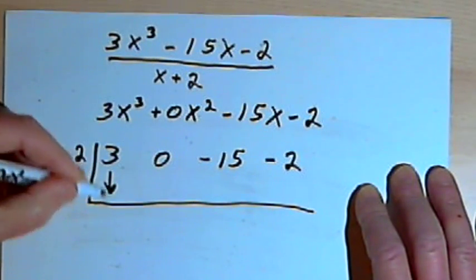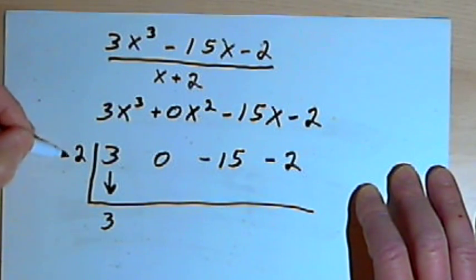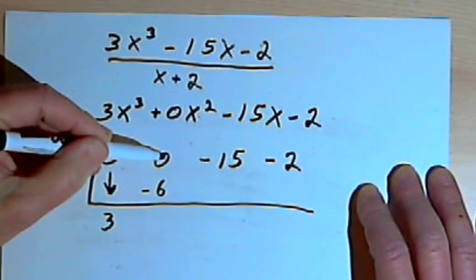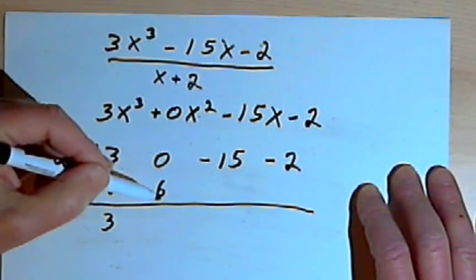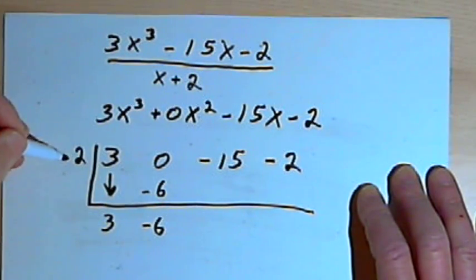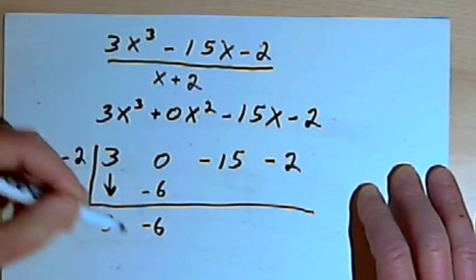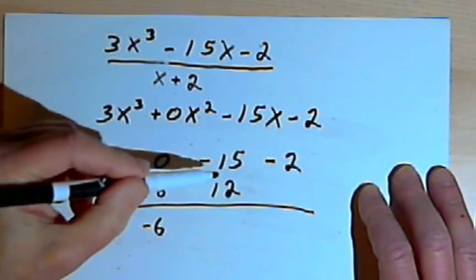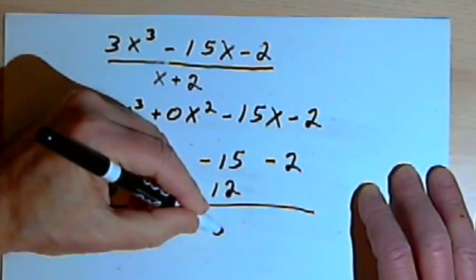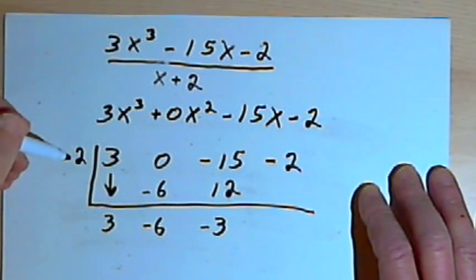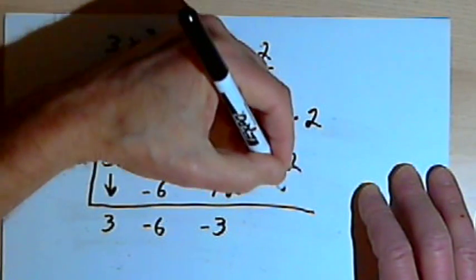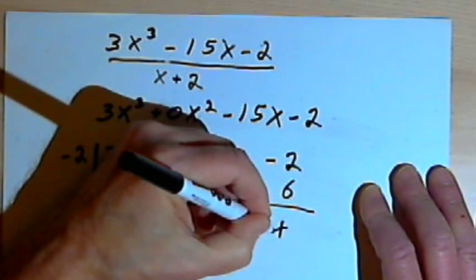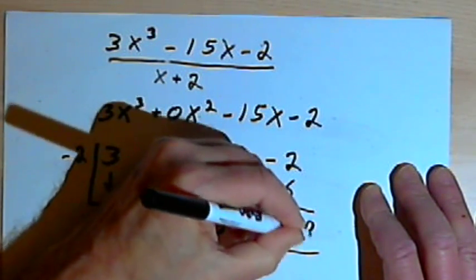Now I'll begin. I bring down that first 3. I multiply negative 2 times 3, that's going to be a negative 6. Write that underneath the next number. Add those two numbers together, the numbers in the second column. 0 and negative 6 is negative 6. I multiply. I've got negative 2 times negative 6 is positive 12. I write that in the next column under the negative 15. Add those two numbers together and get a negative 3. Then I multiply again. I've got negative 2 times negative 3, so that's positive 6. Write that in the last column underneath the negative 2. Add those together and I get a 4. I'm going to put a little box around that for my remainder.